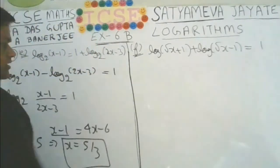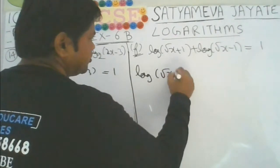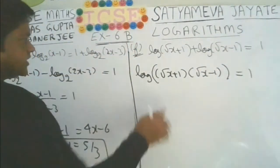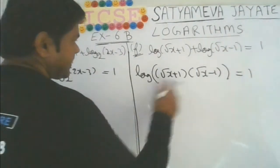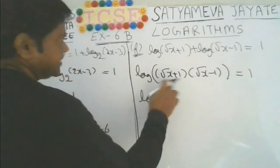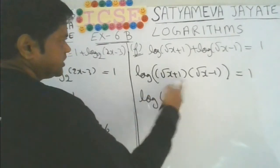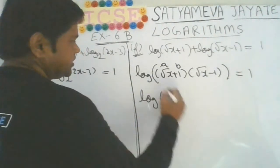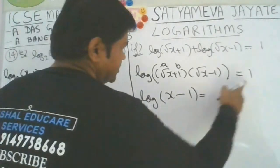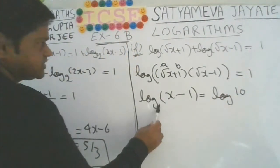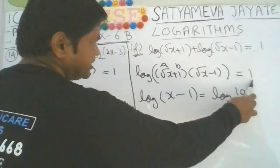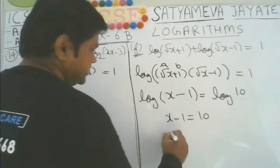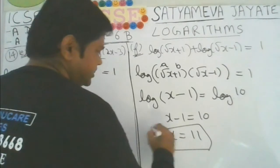The plus sign means multiplication: log of root x plus 1 times root x minus 1. This is a plus b times a minus b equals a squared minus b squared. Taking root x as a and 1 as b: root x squared minus 1 squared equals x minus 1. Since log of x minus 1 equals 1, and log 10 base 10 equals 1, we have x minus 1 equals 10, so x equals 11.